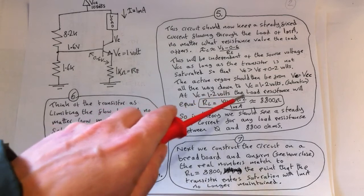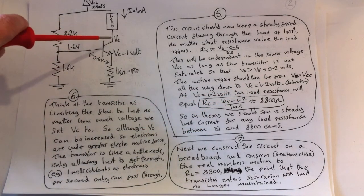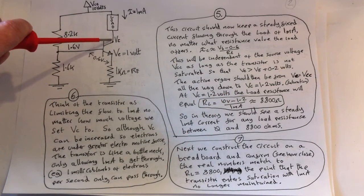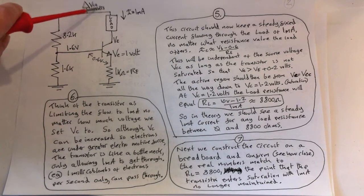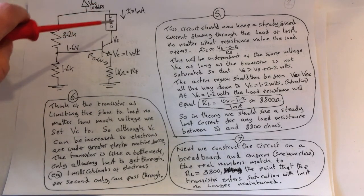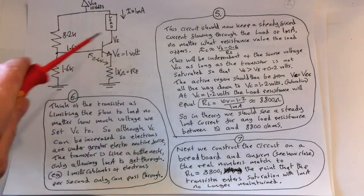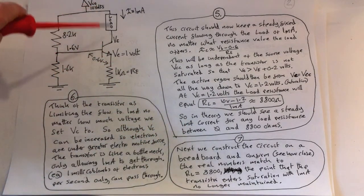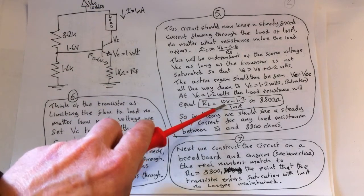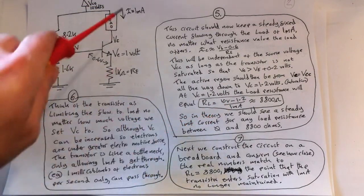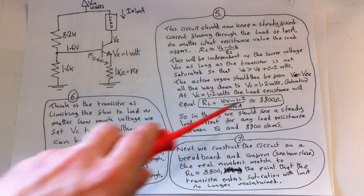If we've got 1.2 volts at the collector and 10 volts here, then this difference divided by 1 milliamp will give you the actual load resistance. That's simple Ohm's law again, a simple voltage drop here. So we've got 10 volts minus 1.2 divided by 1 milliamp gives us 8,800 ohms.